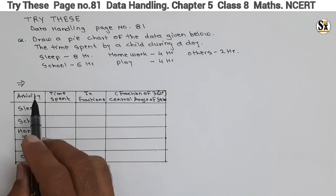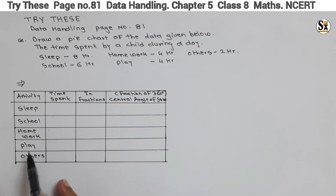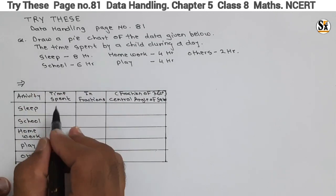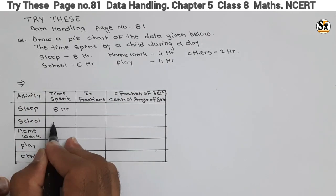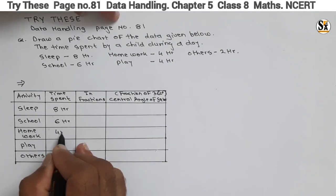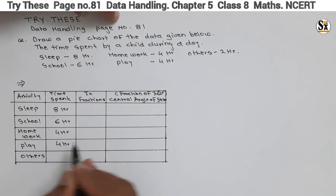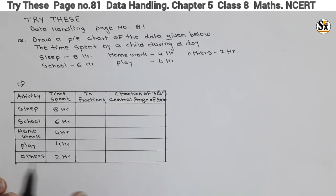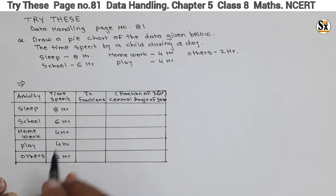In this table there are four columns. In the first column: Activity — Sleep, School, Homework, Play, Others. In the next column: Time Spent — Sleep: 8 hours, School: 6 hours, Homework: 4 hours, Play: 4 hours, Others: 2 hours. This is the data given in the question. The total hours add up to 24: 6 plus 4 is 14, plus 4 is 18, plus 2 is 20... wait, 8 plus 6 plus 4 plus 4 plus 2 equals 24 hours.